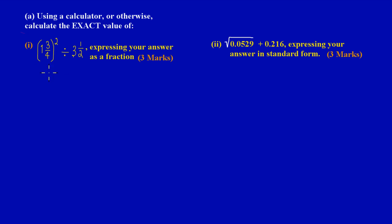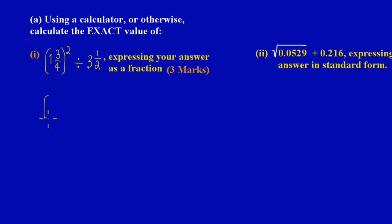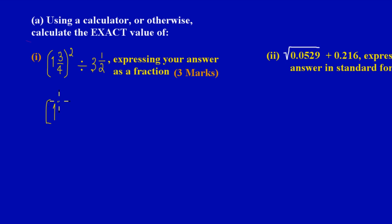Here they have given us some mixed numbers. You call these kind of fractions complex fractions. We have 1 and 3 quarters all squared divided by 3 and a half and they are stating here that we should express our answers as a fraction and usually that is a fraction in its lowest term and that is an easy 3 marks.